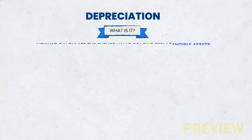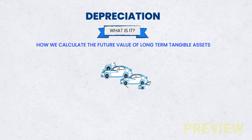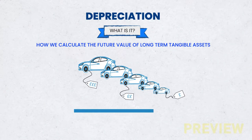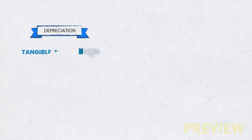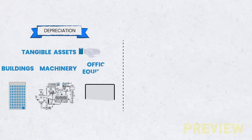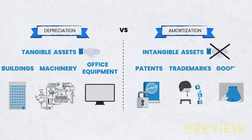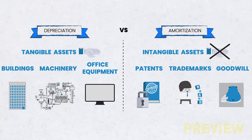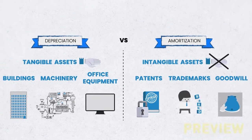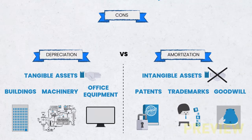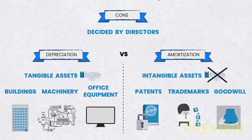What is depreciation? Depreciation is the way we value the future value of long-term tangible assets. Depreciation essentially allows businesses to divide the cost of an asset over its lifetime. The value lost each year is charged against the company's profits and loss accounts until the asset is worthless.